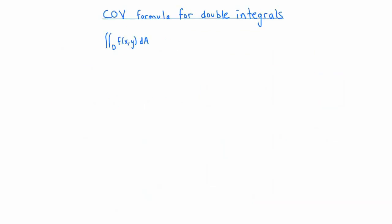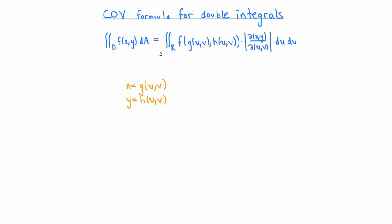All of these intuitive arguments generalize to dimensions two and higher. Before we look at the details, let's go ahead and show one of the end products: the change of variables formula for double integrals. Suppose we're computing the double integral of a function f of x and y over a region D in the plane. If we make a change of variables x equals g of uv and y equals h of uv, our original double integral becomes the double integral over a region R of f of g, h times the absolute value of the determinant of the Jacobian matrix du dv.